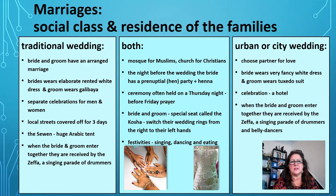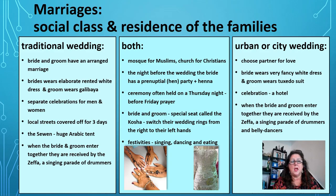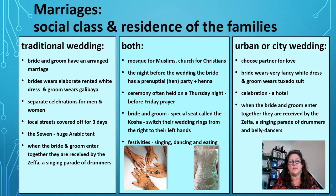Let's now look at marriages, which are heavily dependent on social class and the residence of the families. In a traditional wedding, the bride and groom would probably have an arranged marriage — not that you've never seen the person before; the two fathers arrange it and it could well be your cousin. The bride wears an elaborate rented white dress, and the groom would wear a galabaya. The celebrations are separated for men and women, and the local street is covered for about three days with a huge Arabic tent called a Siwan. When the bride and groom enter together, they are received by a Zephyr, a singing parade of drummers.